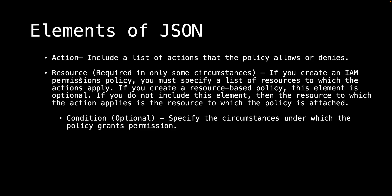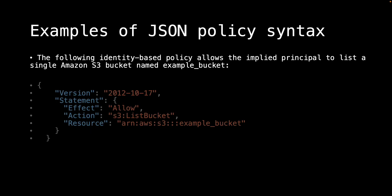Condition is also optional. It specifies the circumstances under which the policy grants permission. Let's understand all these elements through examples. This is the first example of the JSON policy.